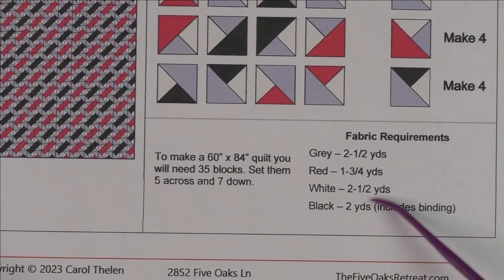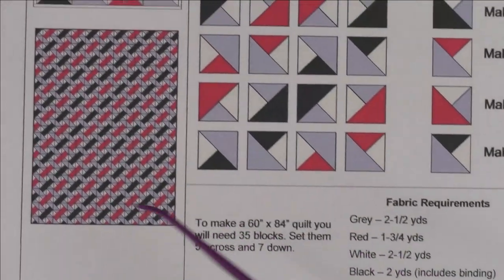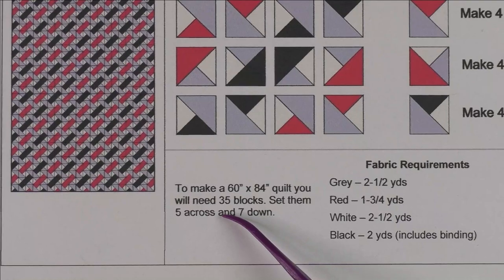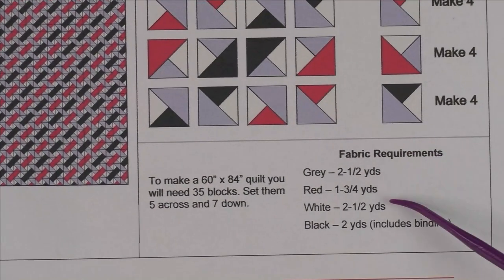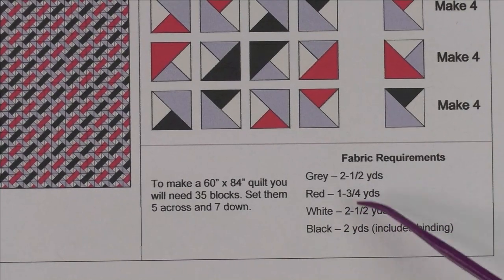I have instructions here of how much fabric you need if you want to make this quilt. You'll make 35 blocks and set them five across and seven down, and these are the fabrics you need for the top and the binding.